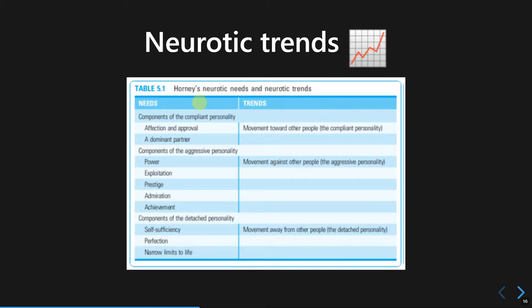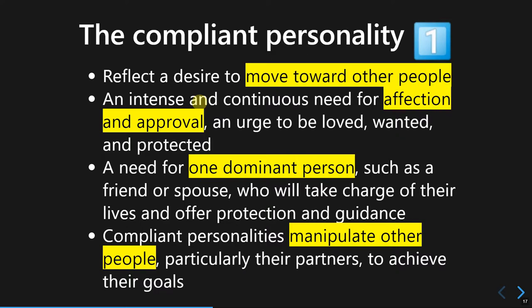The third type of neurotic personality according to Horney is the detached personality. Instead of submitting to other people or aggressively seeking influence, this person withdraws from social relations because they cannot bear the risk of being hurt by others. Rather than moving toward or against other people, they move away from them. There are three dominant needs in this personality type: self-sufficiency, perfection, and no limits of life. The first type — the compliant personality — will be explained in terms of how they cope with basic anxiety and relate to others.